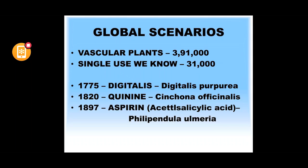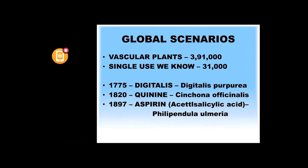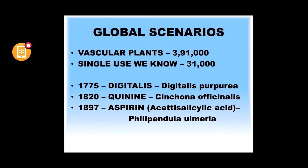If you look into the global scenario on this blue planet, we have 3,91,000 vascular plants — those having a well-developed xylem, phloem, and transporting mechanisms; most of them are flowering plants. Among them, we know something about only 31,000. If you look into the history of medicines, the development of medicine starts from plant sources itself.